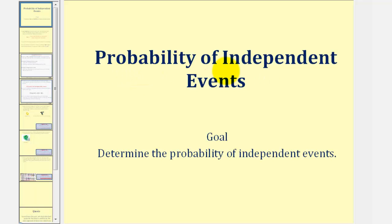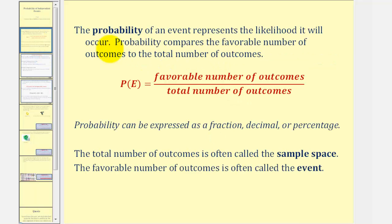Welcome to a lesson on the probability of independent events. Let's begin by reviewing basic probability. The probability of an event represents the likelihood it will occur, and it compares the favorable number of outcomes to the total number of outcomes. The probability of event E equals that quotient, and can be expressed as a fraction, decimal, or percentage.